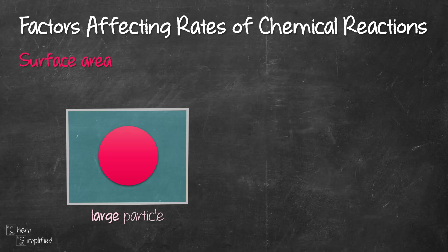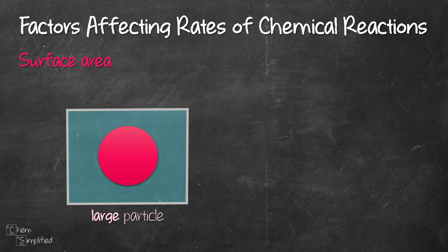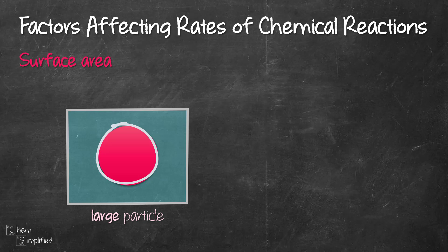The surface of our red solid that is in contact with the blue particles will undergo reaction. The other part — the inner part of the solid particle — because it is not in contact with the blue particles, it will not undergo reaction. So only the surface of the solid particle that is in contact with the other reactant particles will undergo reaction.